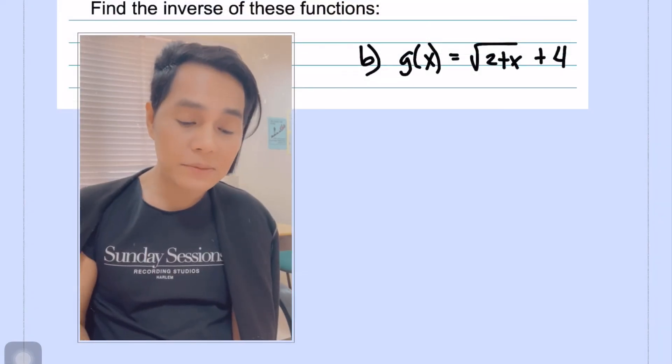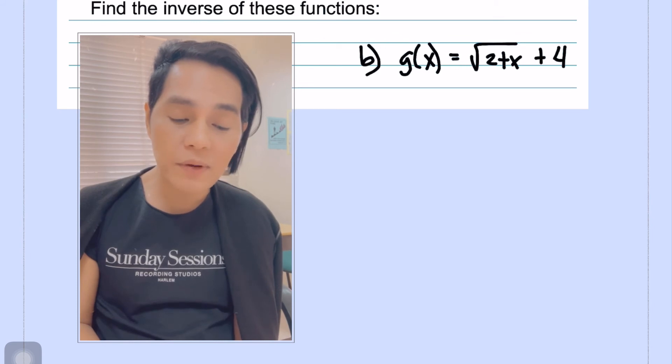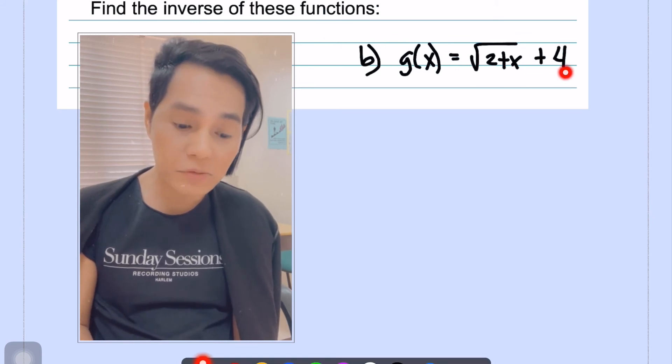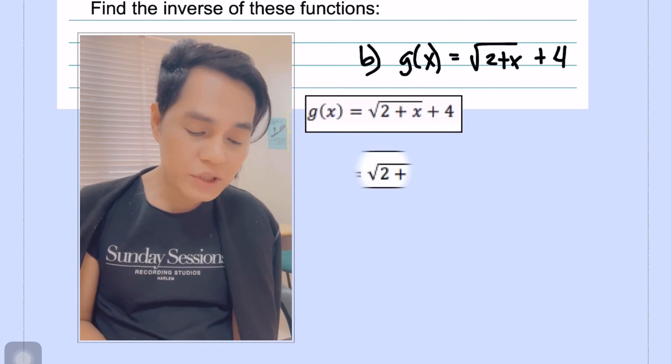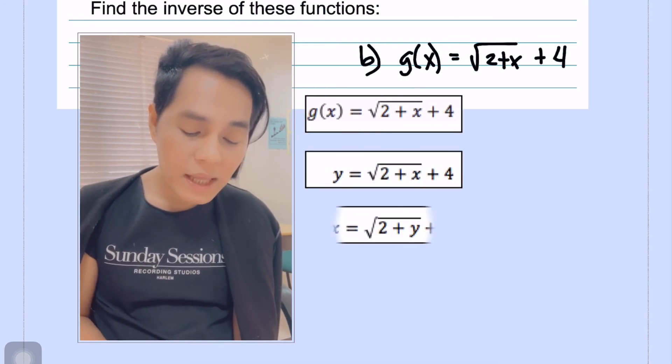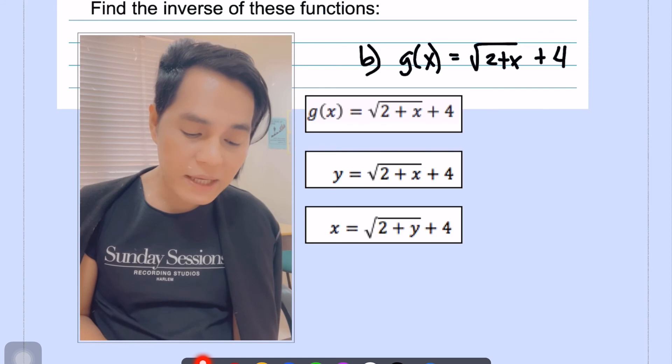We are now down to our last problem which is g(x) equals the square root of 2 plus x plus 4. This is a radical function. So look at this. So the first thing to do is we just change this g(x) to y. And then after that, change y to x. So here we go. Then we are going to solve for y.